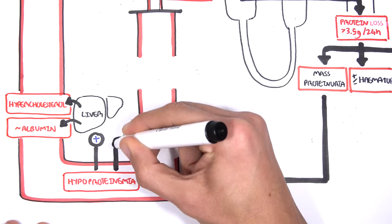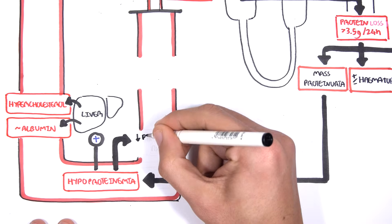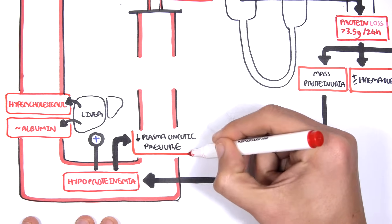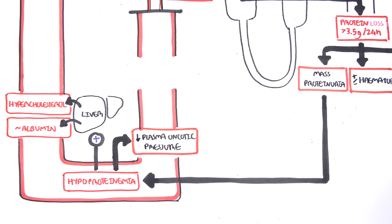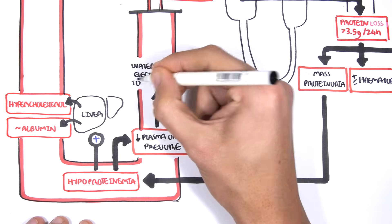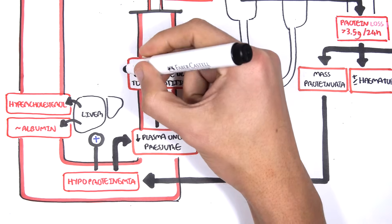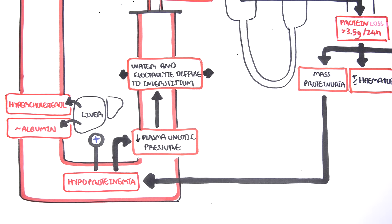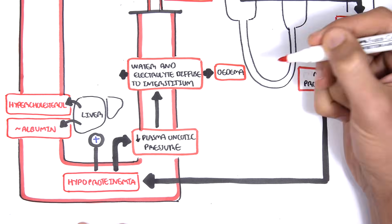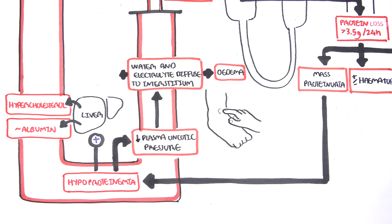The hypoalbuminemia results in reduced plasma oncotic pressure. Reduced oncotic pressure means that water and electrolytes will move into the interstitium from circulation. There are no proteins in the vascular compartment to hold the water and electrolytes, so they move to the interstitium. This results in peripheral edema, which causes swelling of the feet.